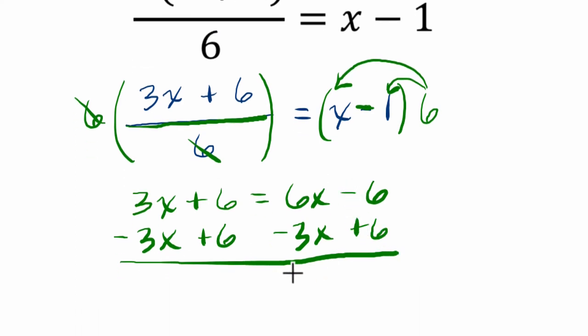Negative six plus six is zero. Six x minus three x is three x. Over here, three x minus three x is zero, and six plus six is 12.